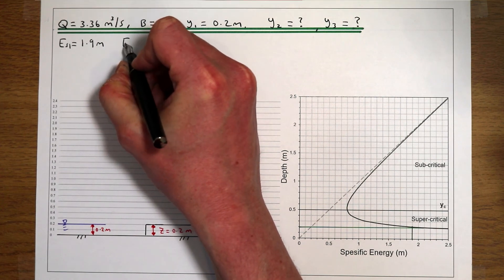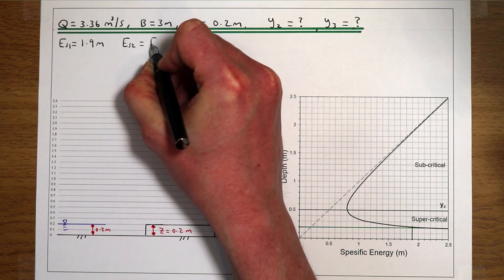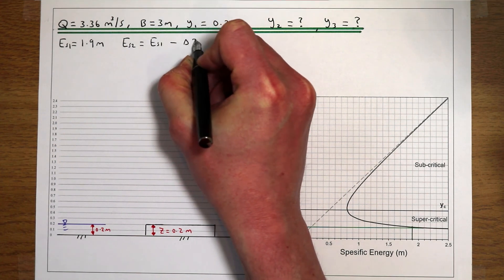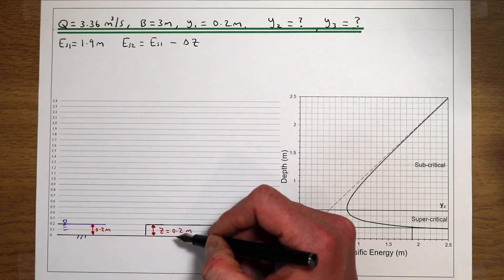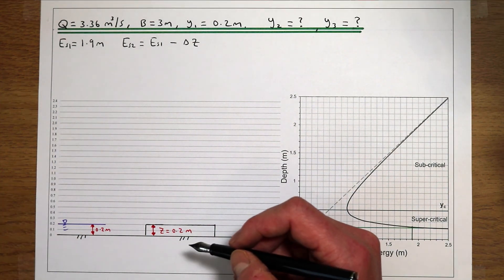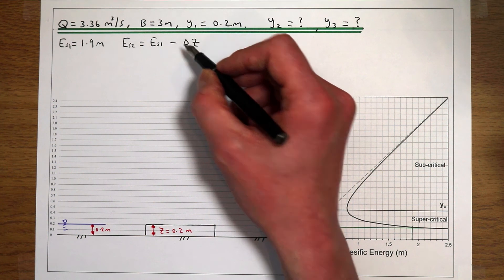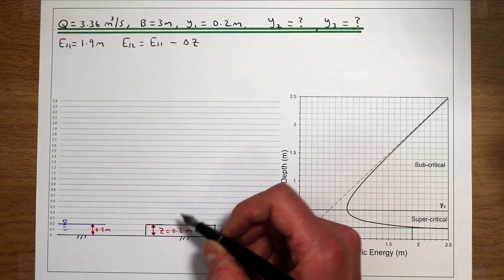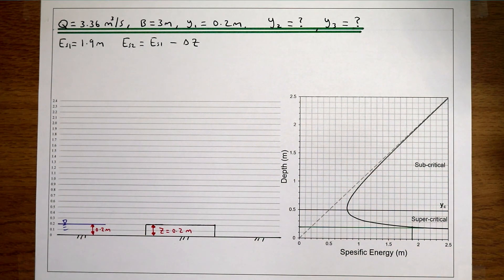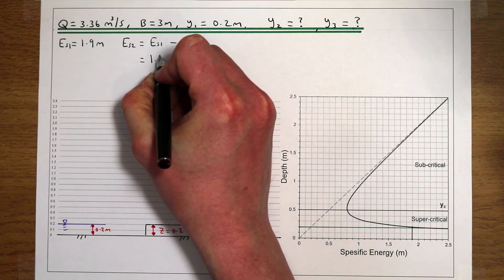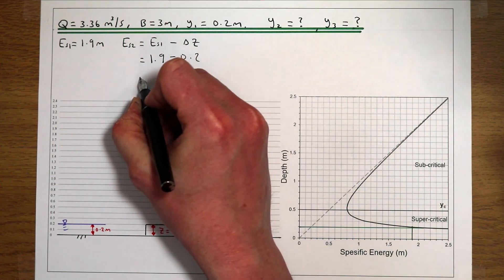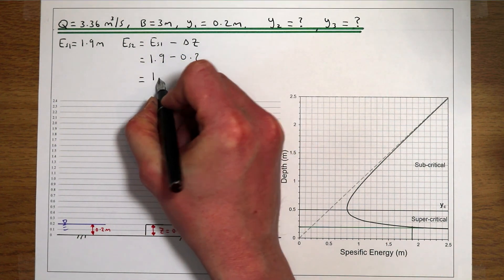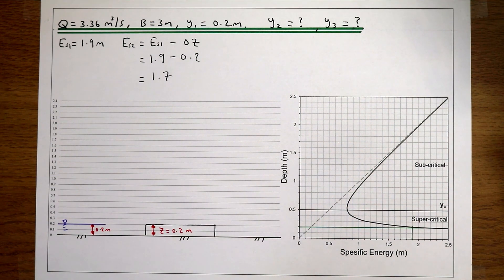Our specific energy at point 2 is going to be our specific energy at point 1 minus the height of the obstruction, because the obstruction subtracts specific energy from the flow. That delta Z — the obstruction — converts energy from the flow into potential energy, subtracting it from the flow. So if our initial specific energy is 1.9 metres and our obstruction is 0.2 metres high, that gives us a specific energy at point 2 of 1.7 metres.